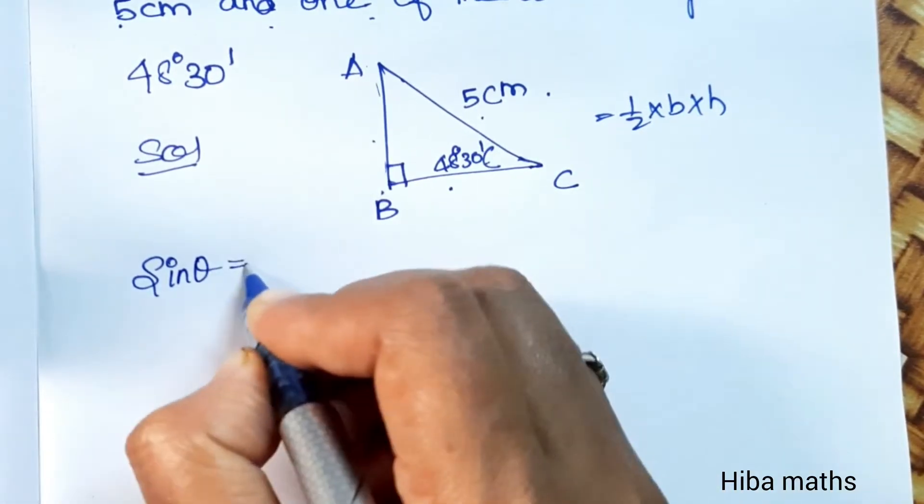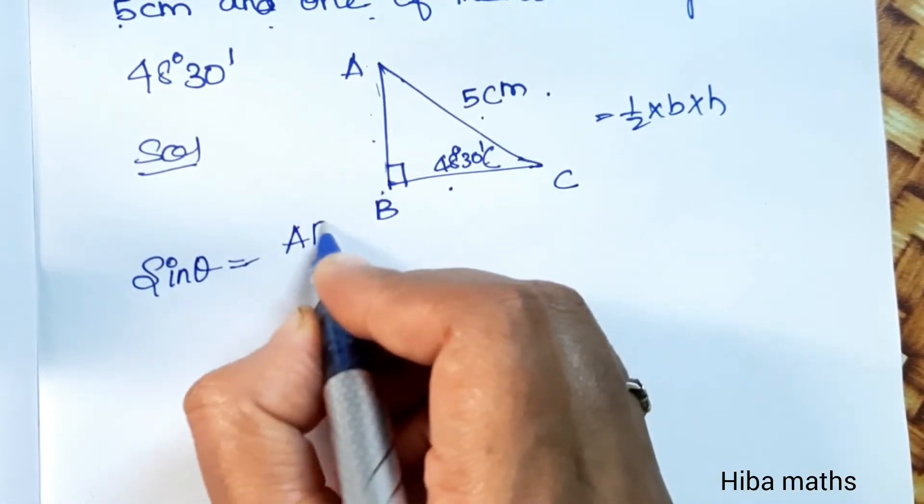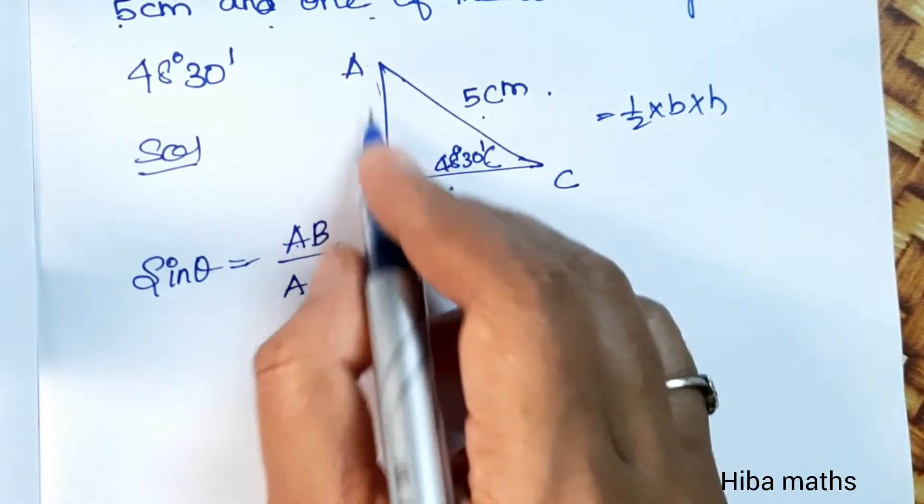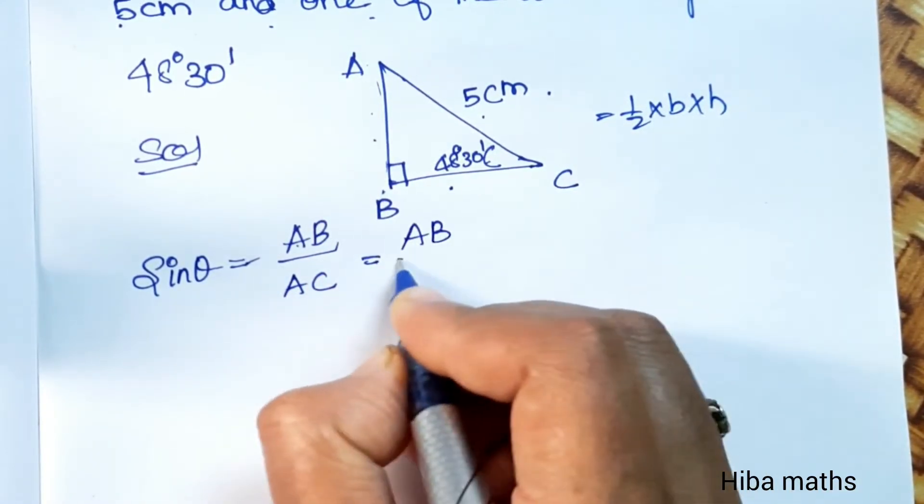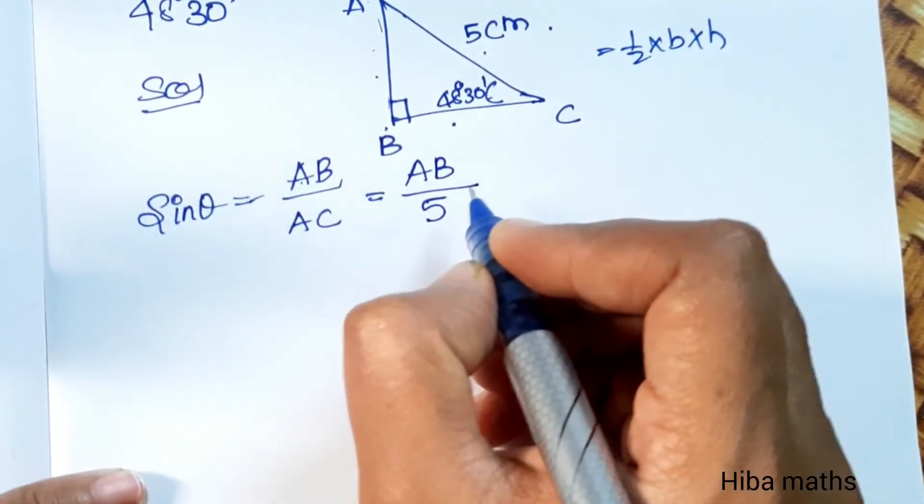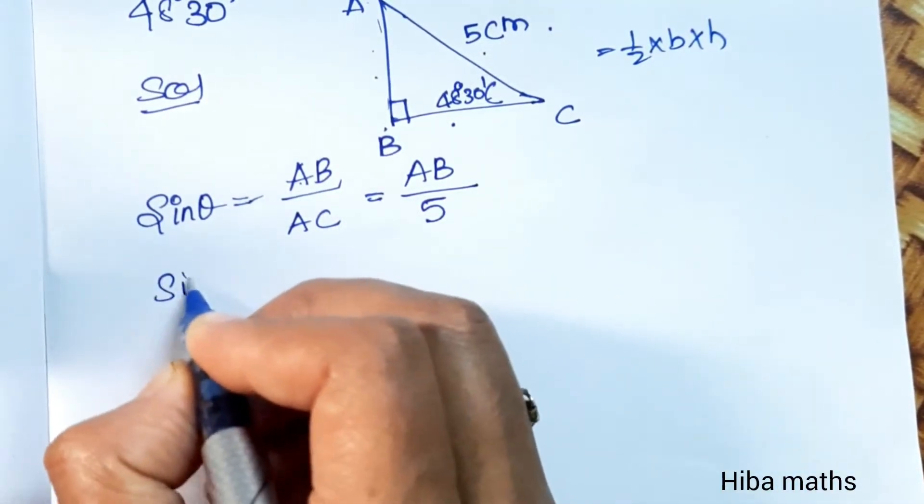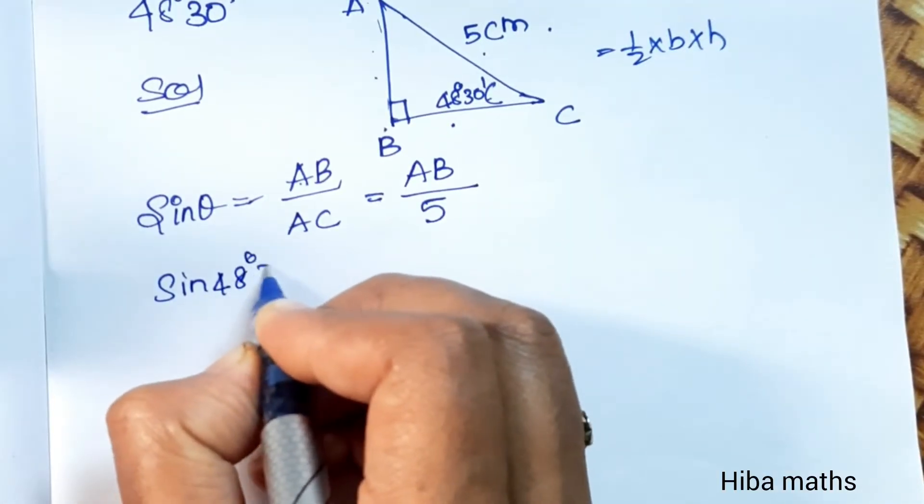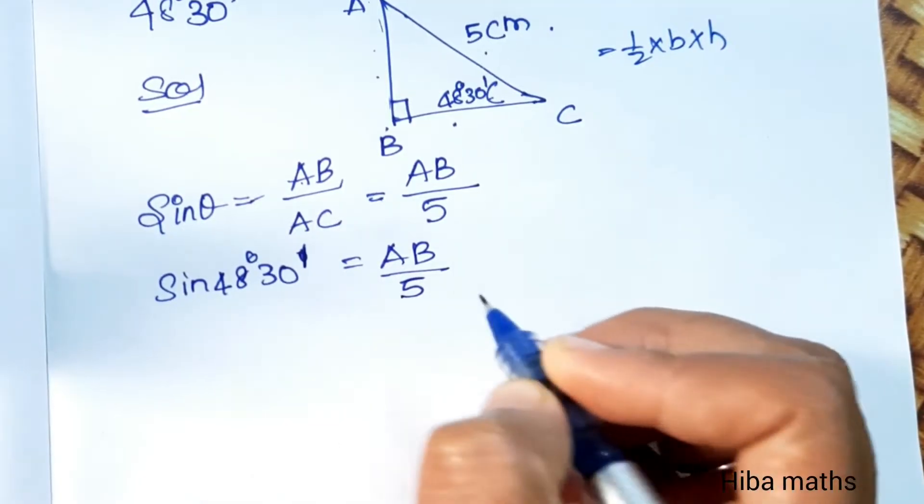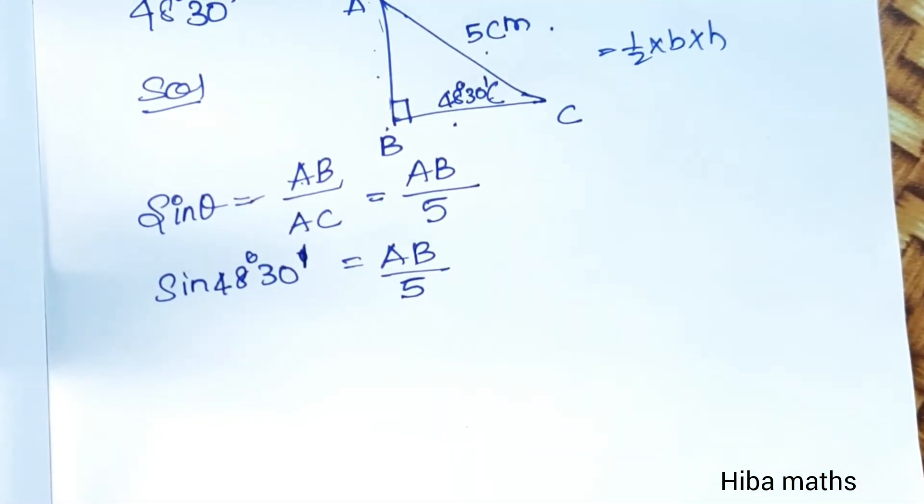Sin theta value is opposite AB by hypotenuse AC. Opposite value is AB divided by hypotenuse value is 5. Sin 48 degrees 30 minutes equals AB by 5.